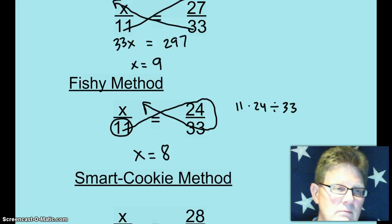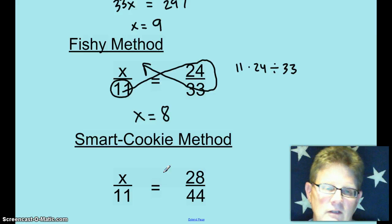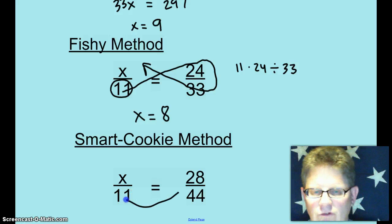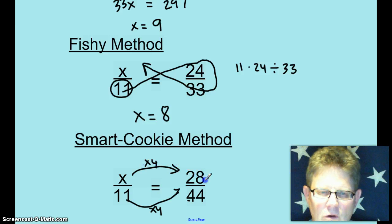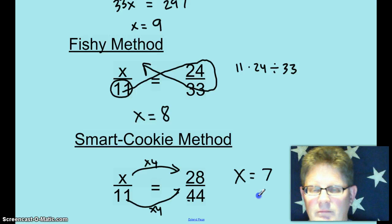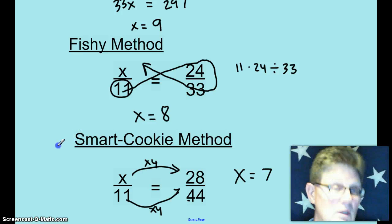And then there's the third method which I call the smart cookie method. This is for smart cookies who hate to use a calculator at all. You just see that 11 times 4 is 44 to get a common denominator. So you ask yourself, what do you have to multiply by 4 to get 28? And you just say, well yeah, X equals 7. And really, it doesn't matter to me which one of those three methods that you do as long as you get the answer correct.